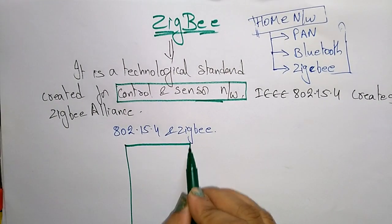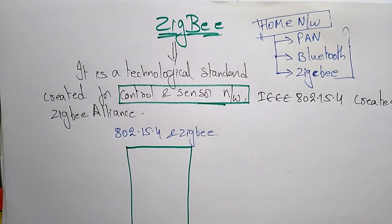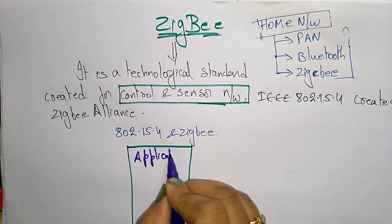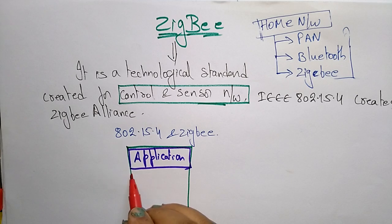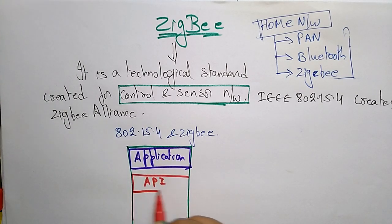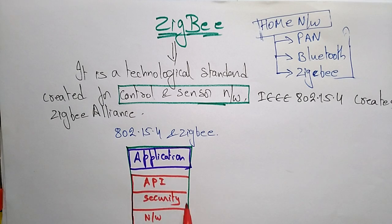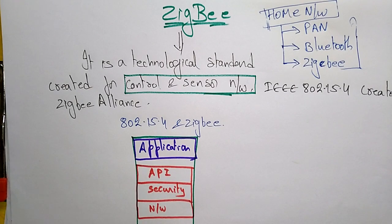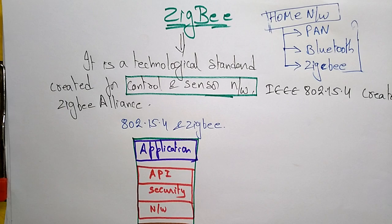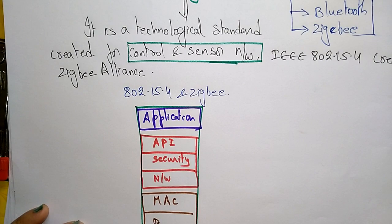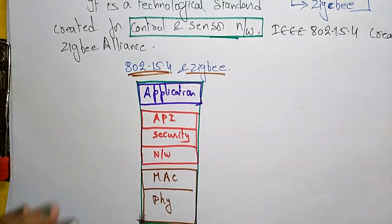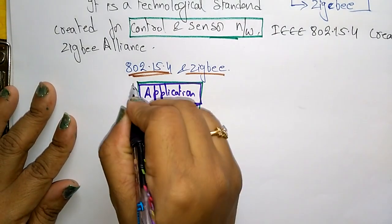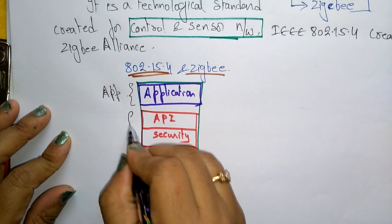Looking at the layer structure, the first layer is the application layer. After that there is another layer — the application interface layer, security, and network — these come under one layer. Next is the medium access control layer, and then the physical layer. These make up the layered structure of 802.15.4 and Zigbee.